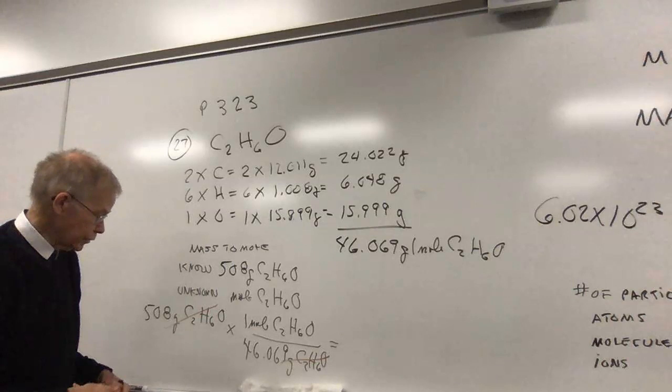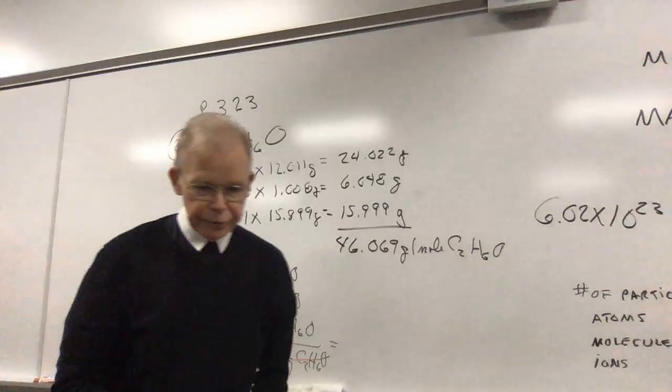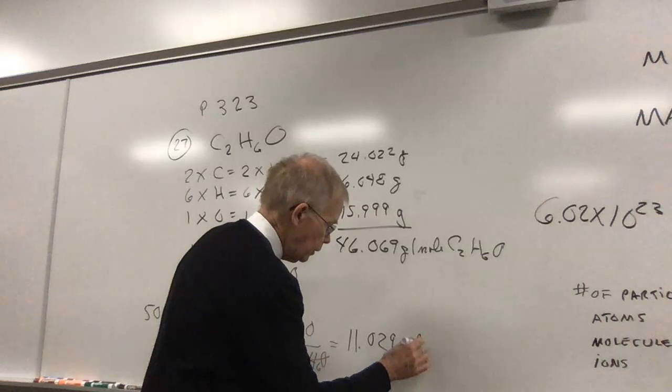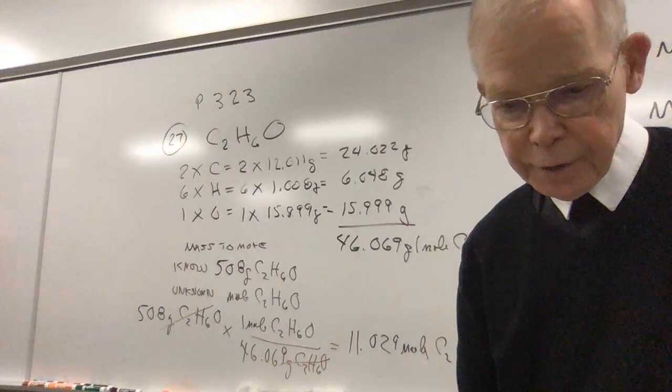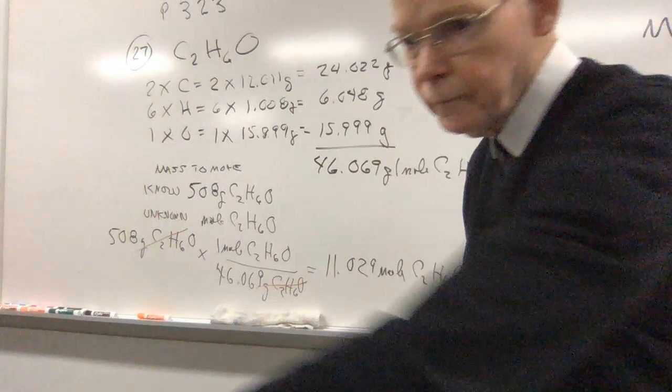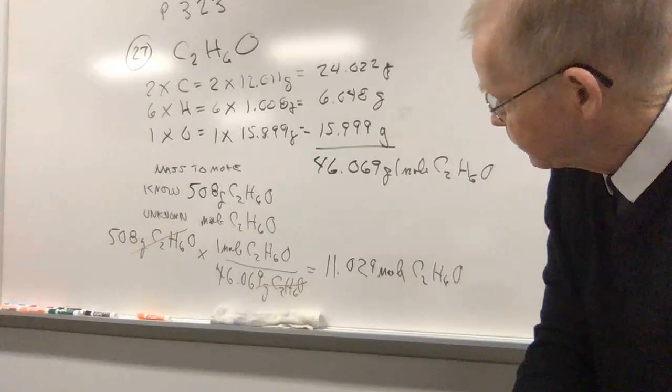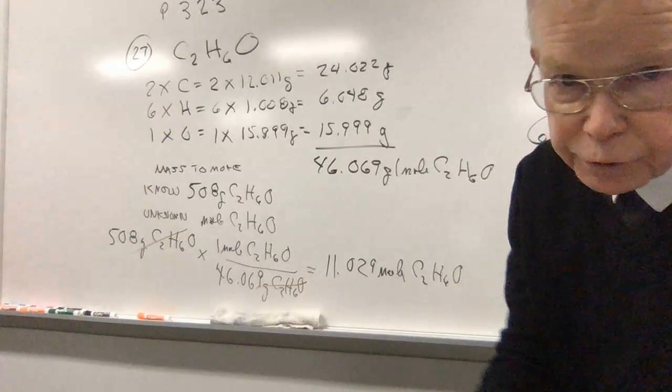If that doesn't cancel, in other words if I made a mistake and flipped this over, things would not cancel, and I know I would be doing something wrong with the problem. Now when I do the division, this is how many moles I got: 11.027 moles of the compound. I'll step aside so you get a chance to look at that and copy it. And finally, I'm going to turn this off again and set up for another calculation.